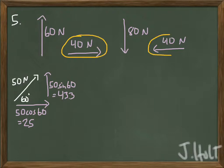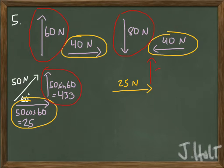Now, I have everything in terms of x and y. Let's add up all the x's. 40 minus 40 plus 25 equals 25. And then the y-direction, 60 minus 80 plus 43.3. Let's pause it there for a second.